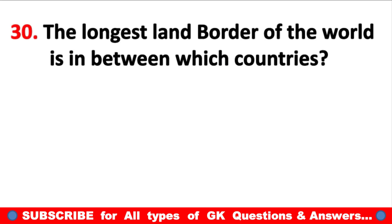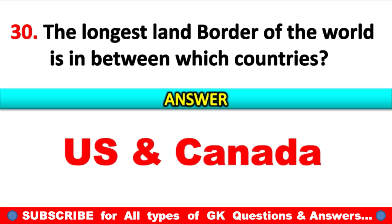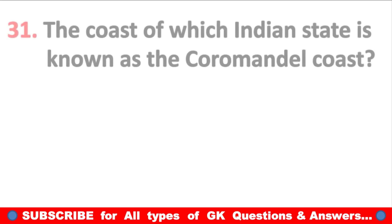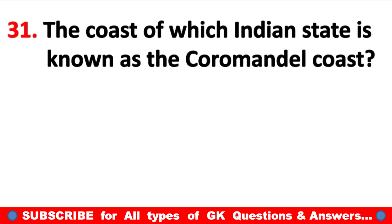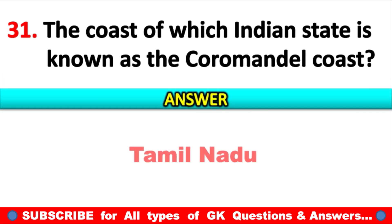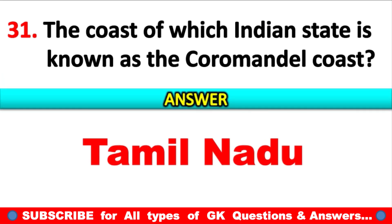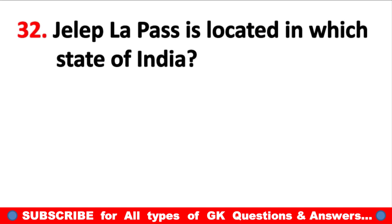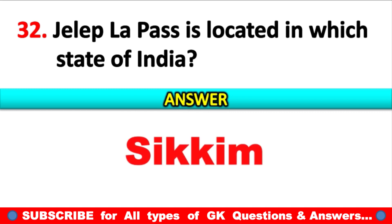The longest land border in the world is between which countries? Answer: USA and Canada. The coast of which Indian state is known as the Coromandel Coast? Answer: Tamil Nadu. Jalal Pass is located in which state of India? Answer: Sikkim.